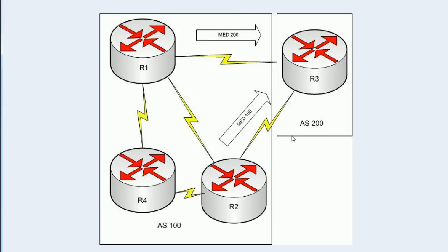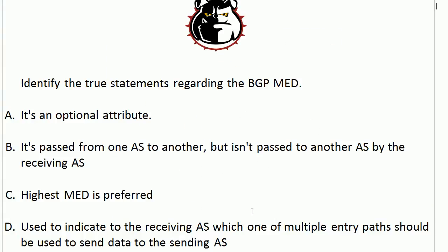Here we've got three routers in AS100 and one router in AS200, router 3. What we want to do here is indicate to router 3 which one of these two paths into AS100 it should use — that there is a preferred path. You can see router 2 is sending a Med of 100, and router 1 is sending a Med of 200. As for choice B, router 3 would not then pass these values on to another router in, say, AS300 — there would be no reason to. So B is absolutely true: the receiving AS does not pass that Med on to routers in another AS.